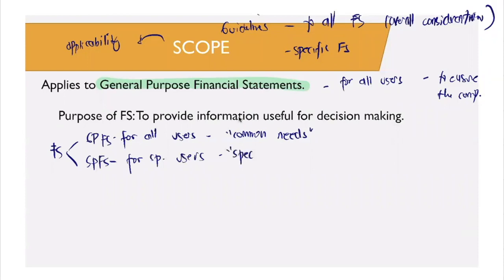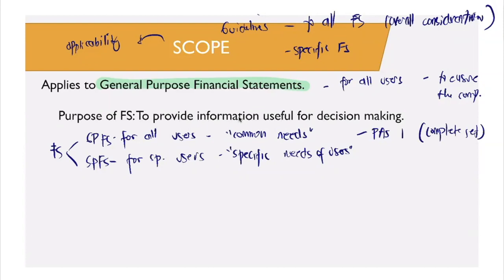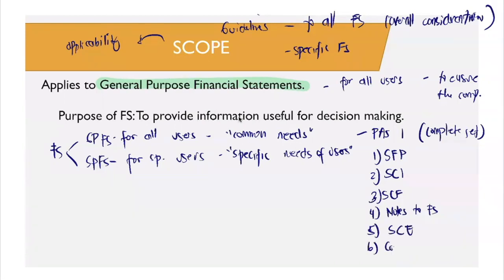General purpose financial statements are provided under PAS 1. What are the complete set of financial statements as discussed before in your conceptual framework? First, we have your statement of financial position. Next, we have your statement of comprehensive income. Next, we have your statement of cash flows. Then we have your notes to financial statements. Further, we also have your statement of changes in equity. And lastly, we have your comparative financial statements for any restatement as provided for by your standard.